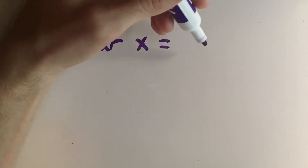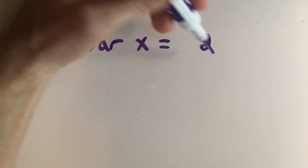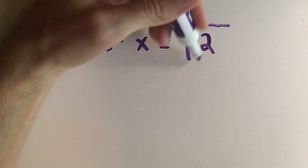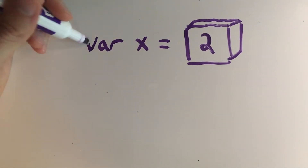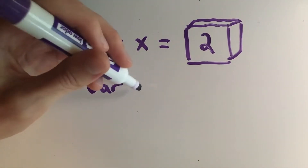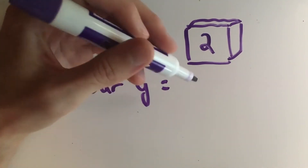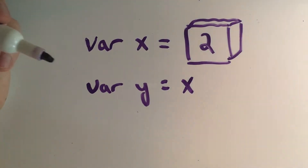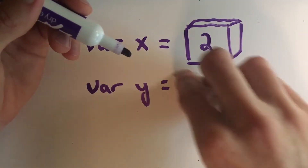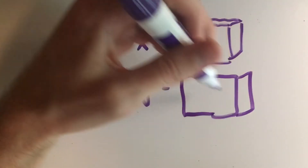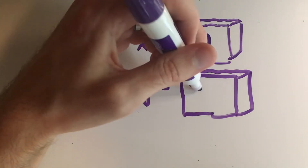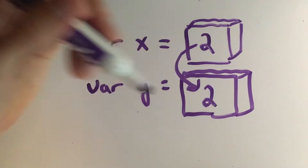It's often the case that you need to point one variable to the value or the reference of another variable. So let's first declare our variable X and set it equal to the value of 2. Second, we're going to declare a variable named Y and set it equal to X. When we set Y to X, what really happens is that the value of X is put into the state of Y. So since X was equal to 2, 2 is placed into the value of Y.